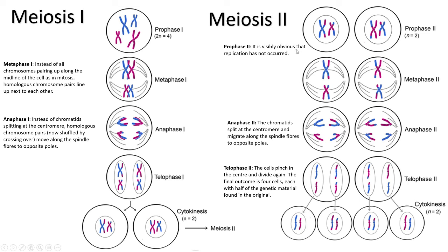Moving to meiosis two — it's clear here that there's no additional DNA replication between the two stages, unlike in mitosis. The cells from meiosis one proceed directly into meiosis two, and mechanically the process is the same as mitosis: chromosomes line up along the center, get pulled apart at the centromere, and migrate to opposite poles, then pinch in and divide again. The outcome is four separate individual haploid cells, rather than the 2n diploid cells you'd have at the start.